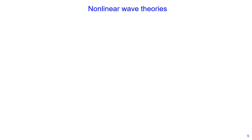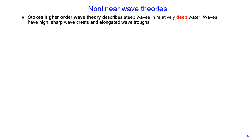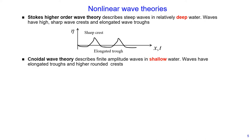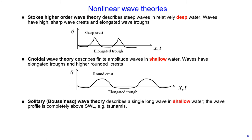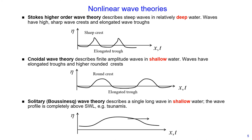I will show you a few examples of non-linear wave theories. For example, Stokes higher order wave theory, which describes steep waves in relatively deep water. These waves have high sharp wave crests and elongated wave troughs, and they look like this. Another non-linear wave theory is cnoidal wave theory, which describes finite amplitude waves in shallow water. These waves have elongated troughs and higher rounded crests. And also another non-linear wave theory is solitary Boussinesq wave theory, which describes a single long wave in shallow water. The wave profile is completely above still water level — for example, tsunamis.